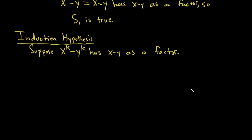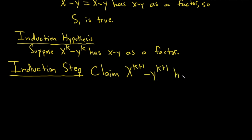So the next step is the induction step. And in this step, we have to show the statement is true when n equals k plus 1. So I'm going to write down what we have to show, so I'll say claim. x to the k plus 1 minus y to the k plus 1 has x minus y as a factor. So that's the claim.